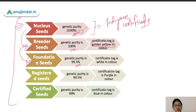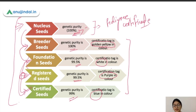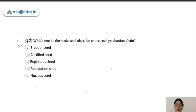Registered seeds are produced using foundation seeds and must maintain 99.5% genetic purity; their tag is purple in color. Certified seeds are also produced from foundation seeds — foundation seeds can be used directly to produce certified seeds, bypassing registered seeds, which are voluntary. Certified seeds must maintain 99% genetic purity and their certification tag is blue in color. Remember this chart of seed classes, tag colors, and genetic purity values.